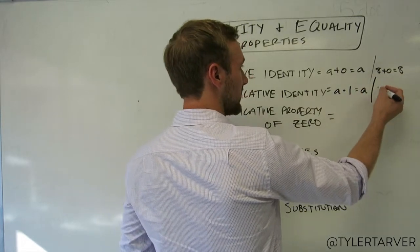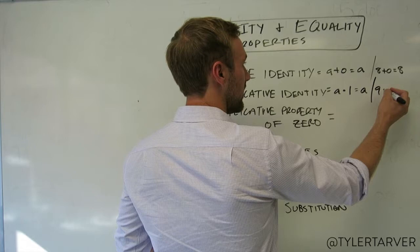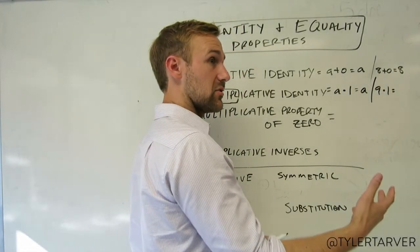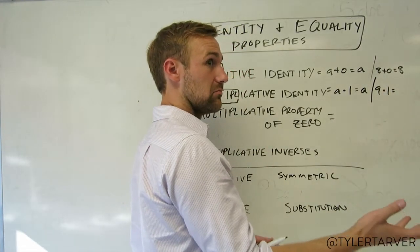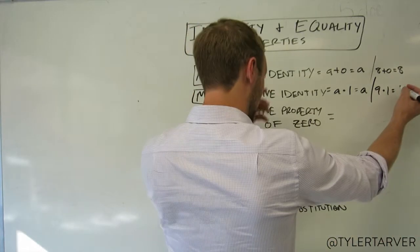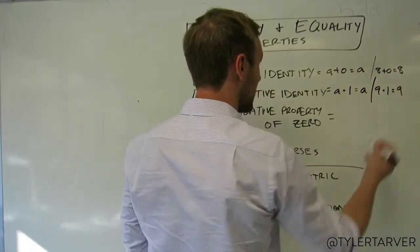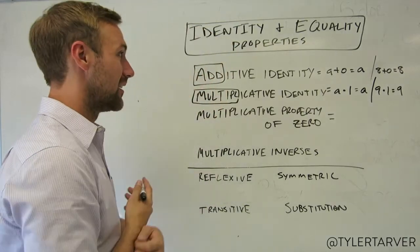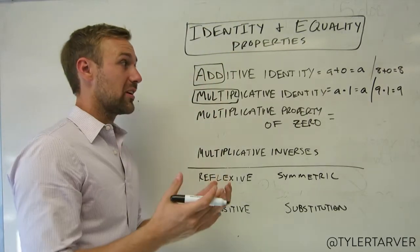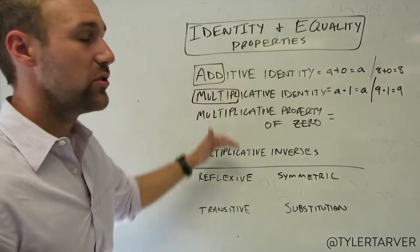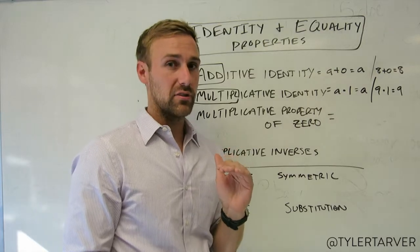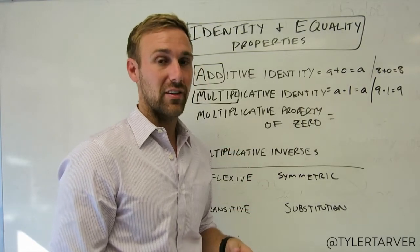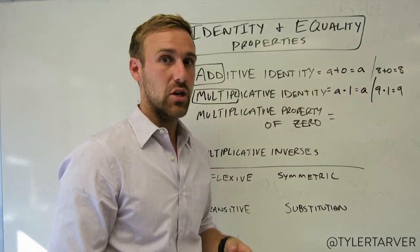For instance, nine times one equals nine — you're multiplying nine by one, which keeps that same amount. That's the multiplicative identity property. You won't use these very often; you might use them in some proofs, but they're just something you have to know.